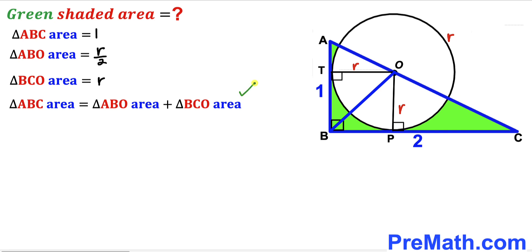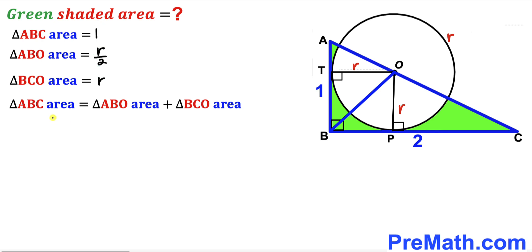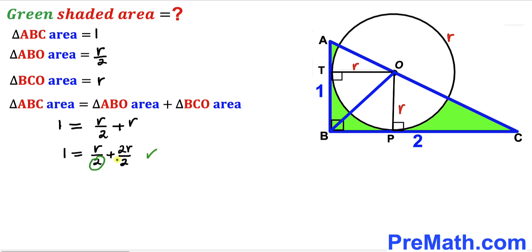Recalling our equation: the area of triangle ABC equals the area of triangle ABO plus the area of triangle BCO. We found triangle ABC area as one, triangle ABO area as r/2, and triangle BCO area as r. Filling in: one equals r/2 plus r. We rewrite r as 2r/2, giving us the same denominator, so one equals 3r/2.